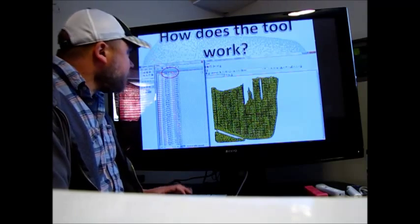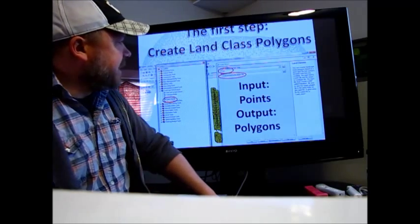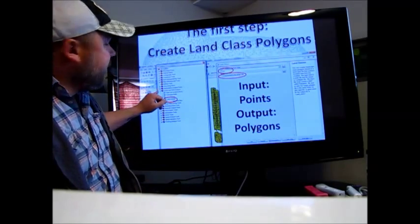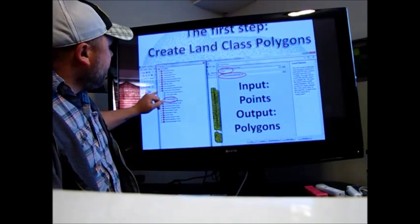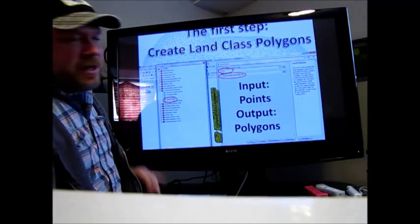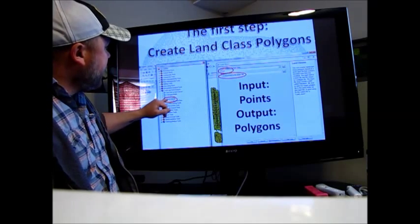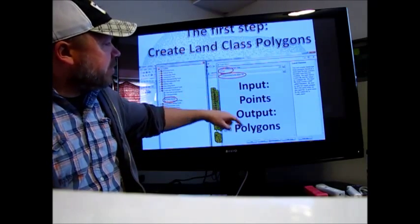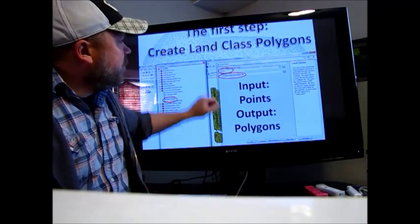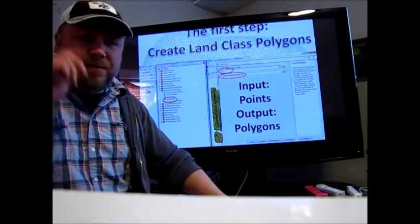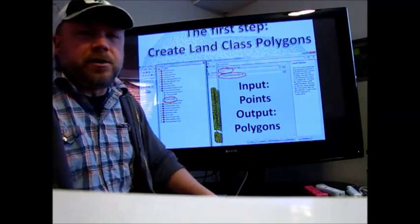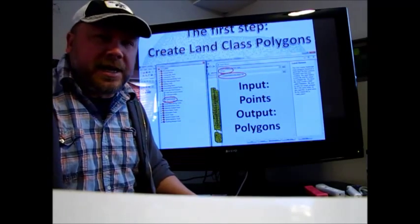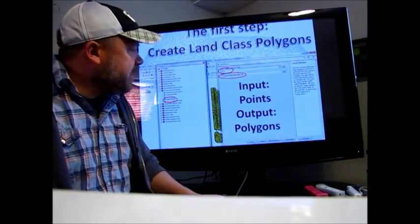The first step would be to create the land class polygons. You would load this toolbar from us into ArcToolbox, go to Landscape Yield Analysis, double-click on the land classes tool set, and this will come up. You input your point shapefile that has the yield and elevation, and then output where you want the landform classes to be.